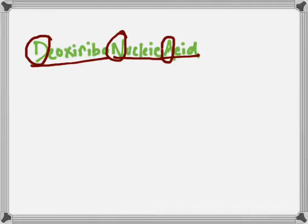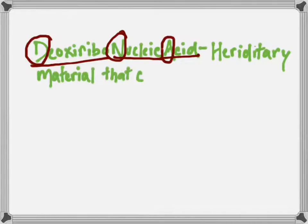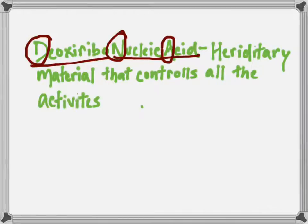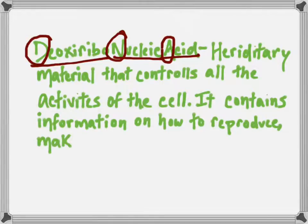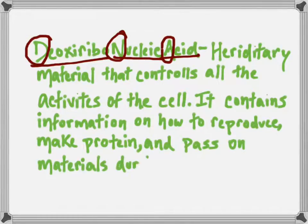So let's go ahead and start with the definition. DNA is hereditary material that controls all the activities of the cell. It contains information on how to reproduce, make protein, and pass on materials during heredity.